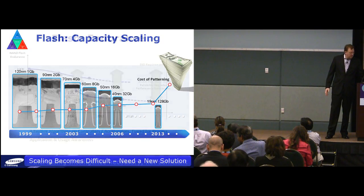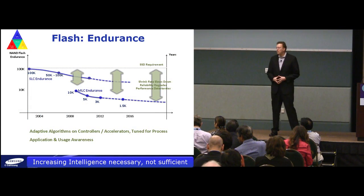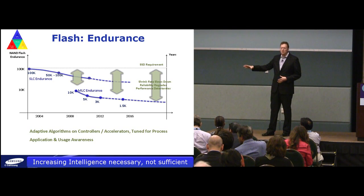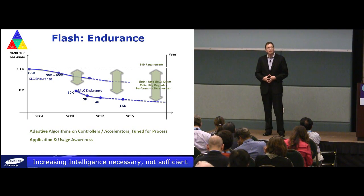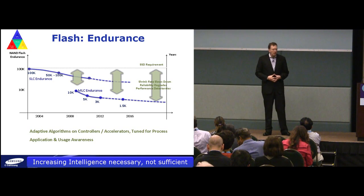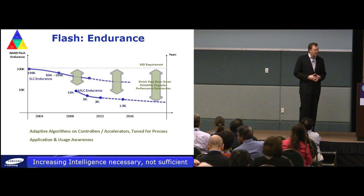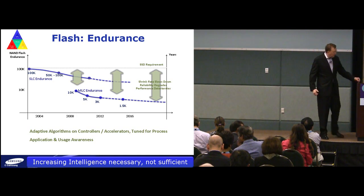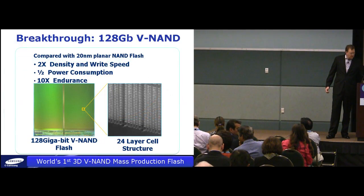The other problem we have is endurance. In flash, as we look at SLC, we started out pretty well, but over time it became more and more difficult to give the endurance required by the applications. I think it was around 2008 or 2009 where our brightest scientists — and a billion dollars, by the way — got together and said how are we going to solve this problem? And that's when they came up with the innovation of vertical NAND technology.